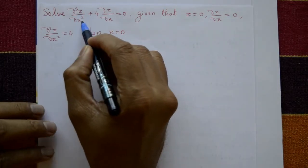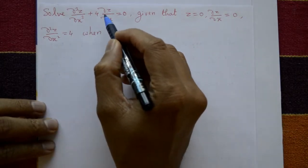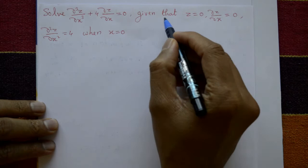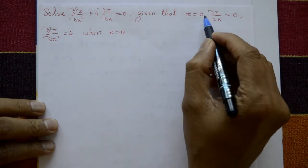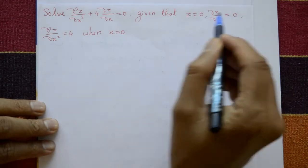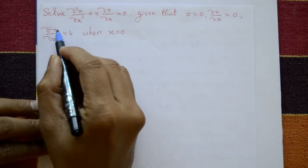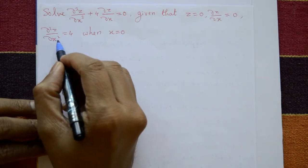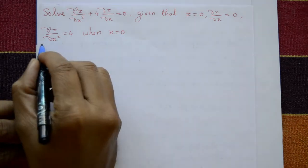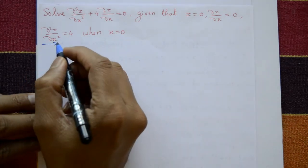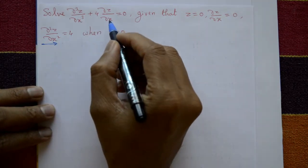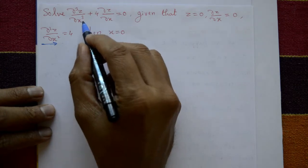Solve d³z/dx³ + 4(dz/dx) = 0, given that z = 0, dz/dx = 0, d²z/dx² = 4 at x = 0.